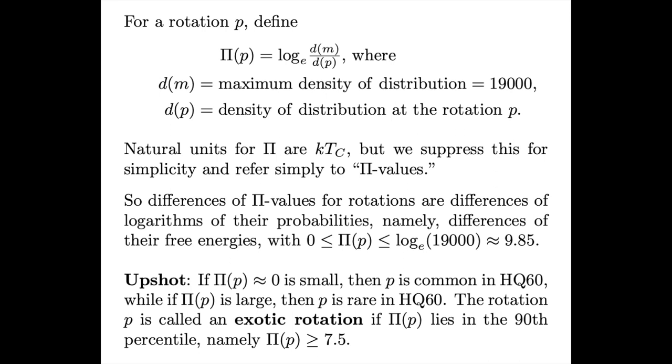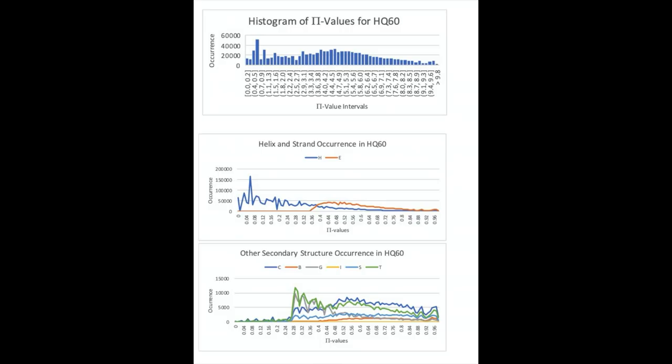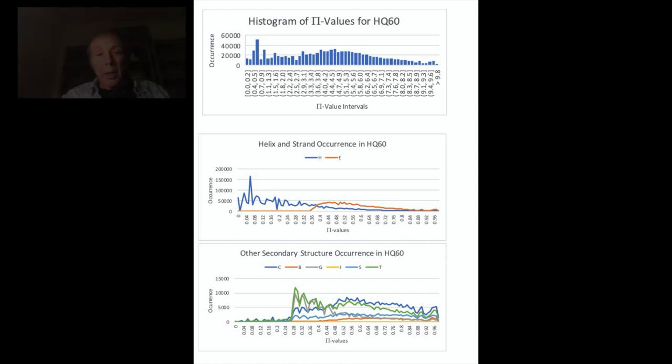The upshot is that the so-called exotic rotations in the 90th percentile, for which the distribution from HQ60 is relatively sparse, are distinguished by the fact that they correspond to protein details of large free energy. Here on the top is a plot of the histogram of pi values across HQ60 and its correlation with alpha helices and beta strands, and on the bottom plot with the other various secondary structure types. Notice the prevalence of alpha helices for low free energy and the mixture of secondary structure types for high free energy. The free energy of the ideal alpha helix, which has pi value zero, has been computed theoretically at minus two kilocalories per mole, and so all pi values may be compared across different peptides and different proteins.